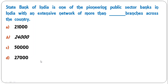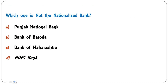State Bank of India is one of the pioneering public sector banks in India with an extensive network of more than how many branches across the country? Options are 21,000; 24,000; 50,000; or 27,000. The correct answer is 24,000 bank branches.